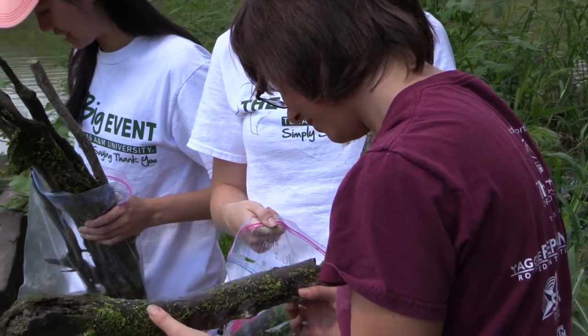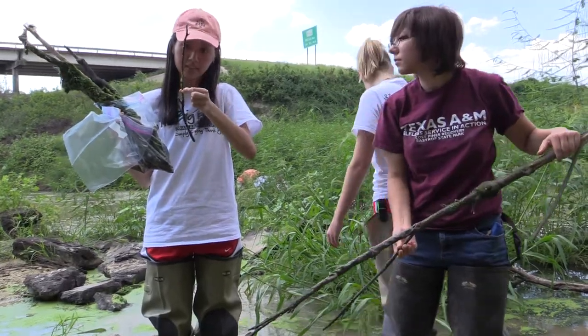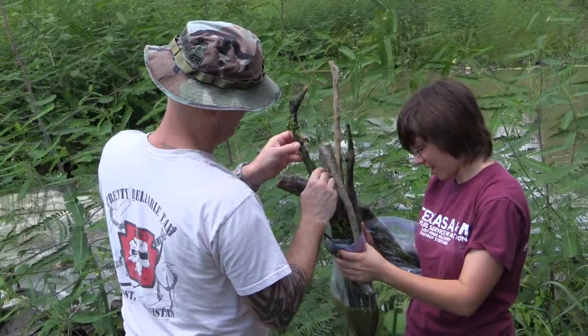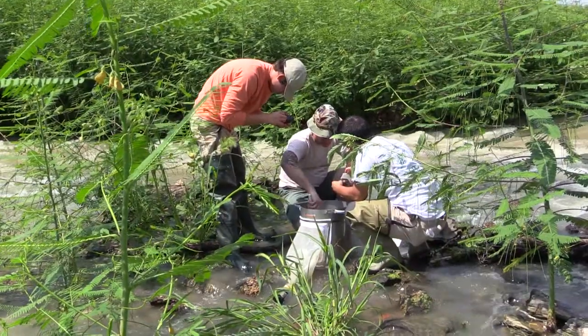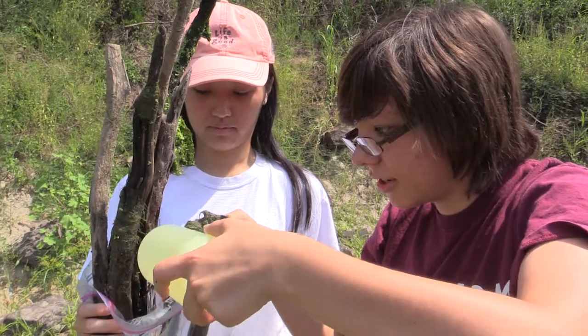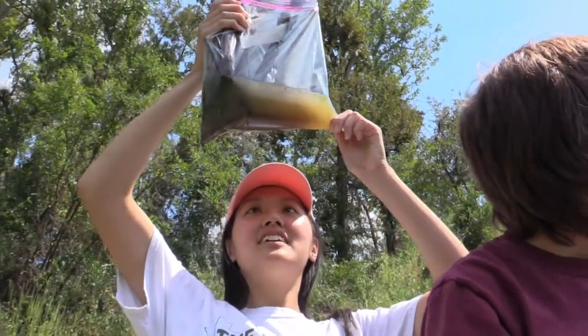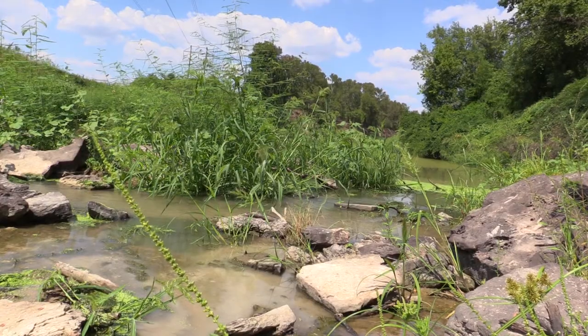We'll collect snag and riffle. The snag is just kind of like sticks that stick out in the calm parts of the river, and the riffle is from the rapids. We'll count the number of insects and take account of the different species.